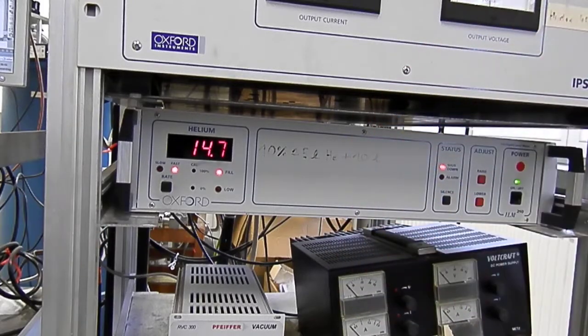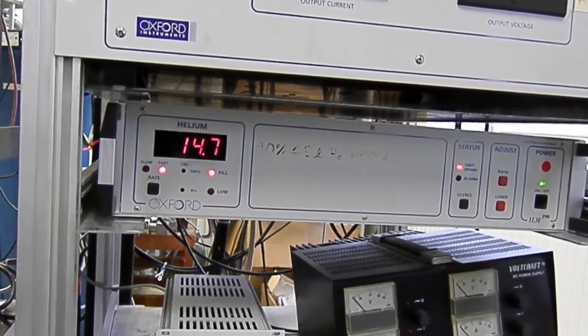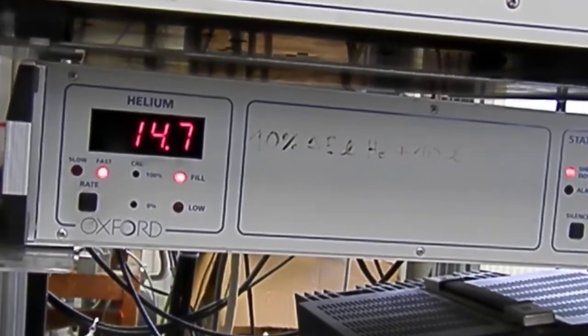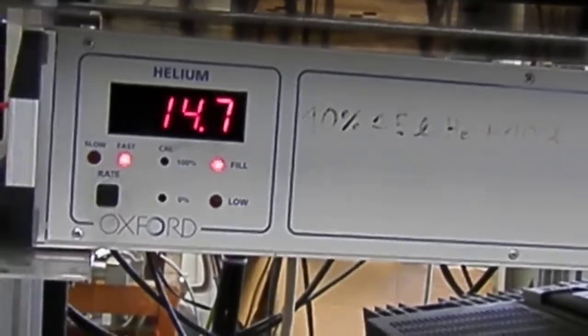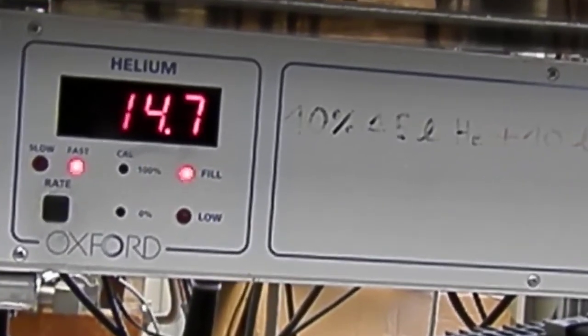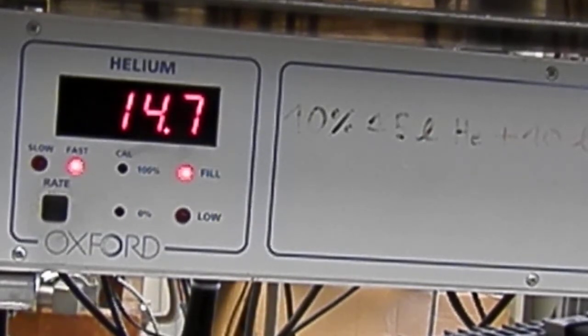It's called the helium level meter. You can see the meter is showing 14.7 percent. That means we have to fill to 100 percent, and it's currently only showing 14 percent of the helium.